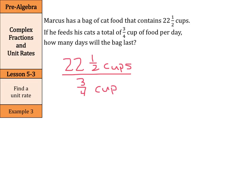Let's go ahead and change our twenty-two and a half into an improper fraction. Twenty-two times two is forty-four plus one is forty-five over two over three-fourths. Well, this is going to be forty-five over two divided by three-fourths. And when we keep, change, flip, this is forty-five over two times four over three.